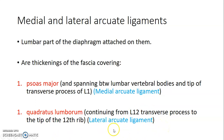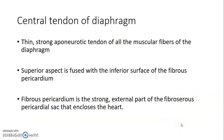The psoas major spans between lumbar vertebral bodies and the tips of transverse processes of L1, while quadratus lumborum continues from the T12 transverse processes to the tip of the 12th rib.